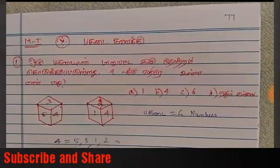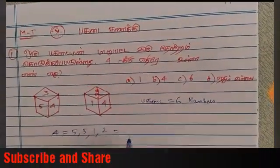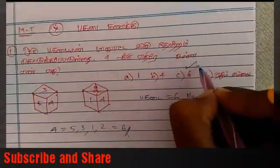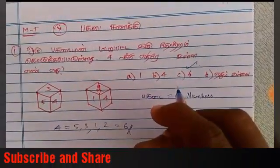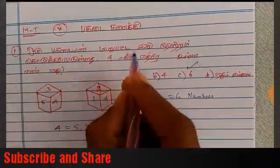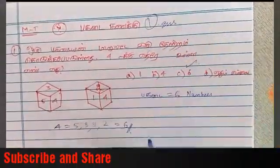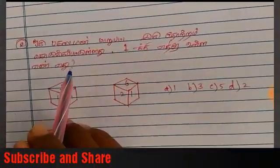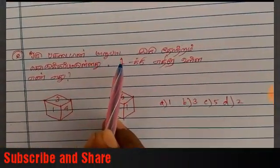Let's see. 6 numbers: 1, 2, 3, 4, 5, 6. So 6 is the answer. Now here we can see the representations.